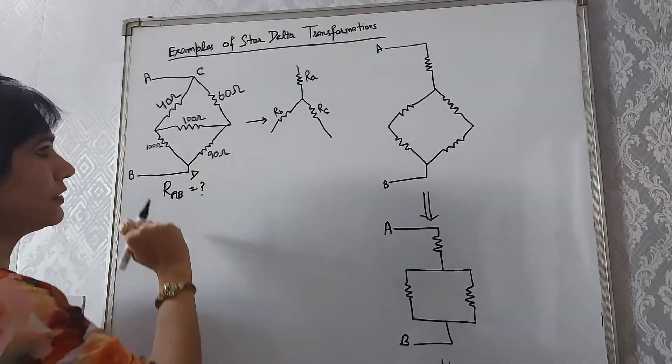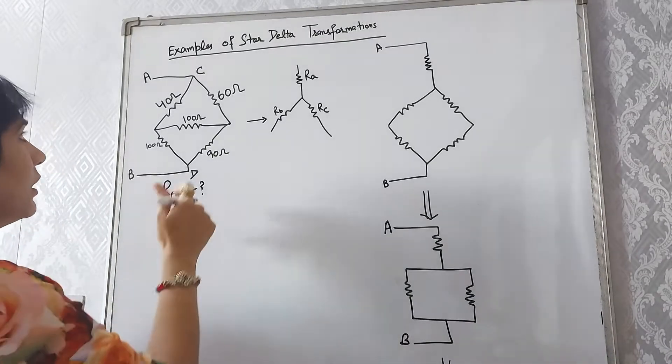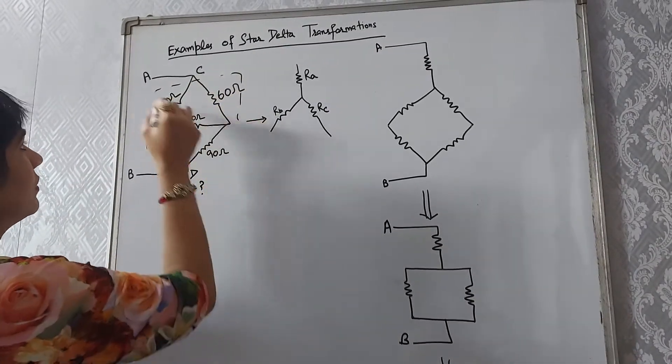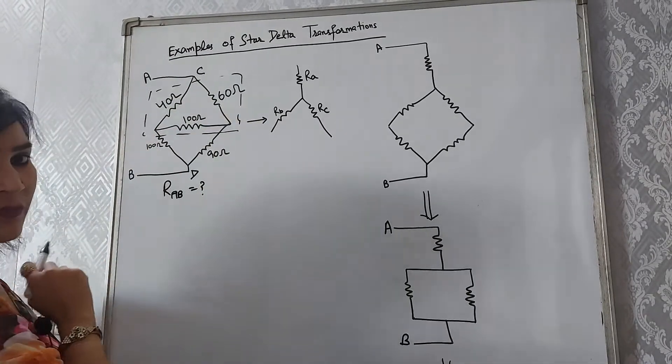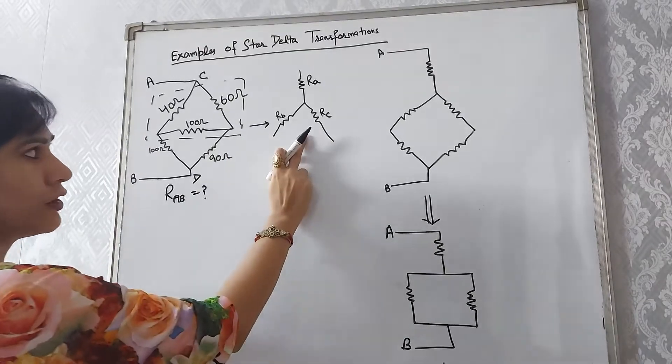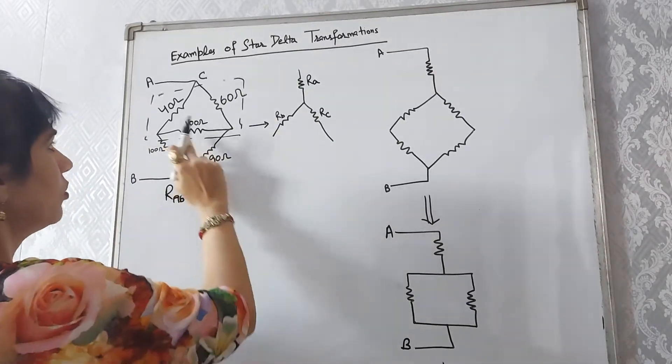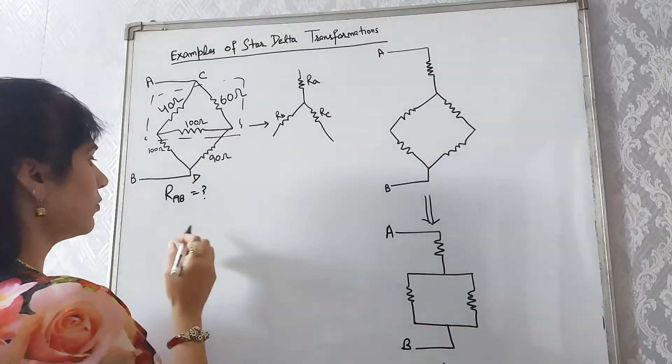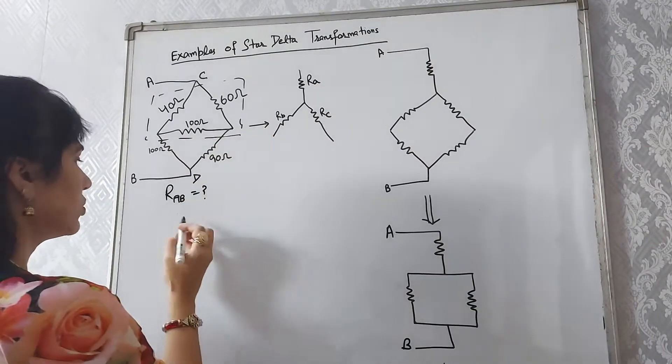Find out is there any delta or star in the circuit. If you look into this diagram, this is our delta. So this delta is converted into star. Here I draw the diagram of star, we convert this delta into star. We know the formulas of delta to star conversion.